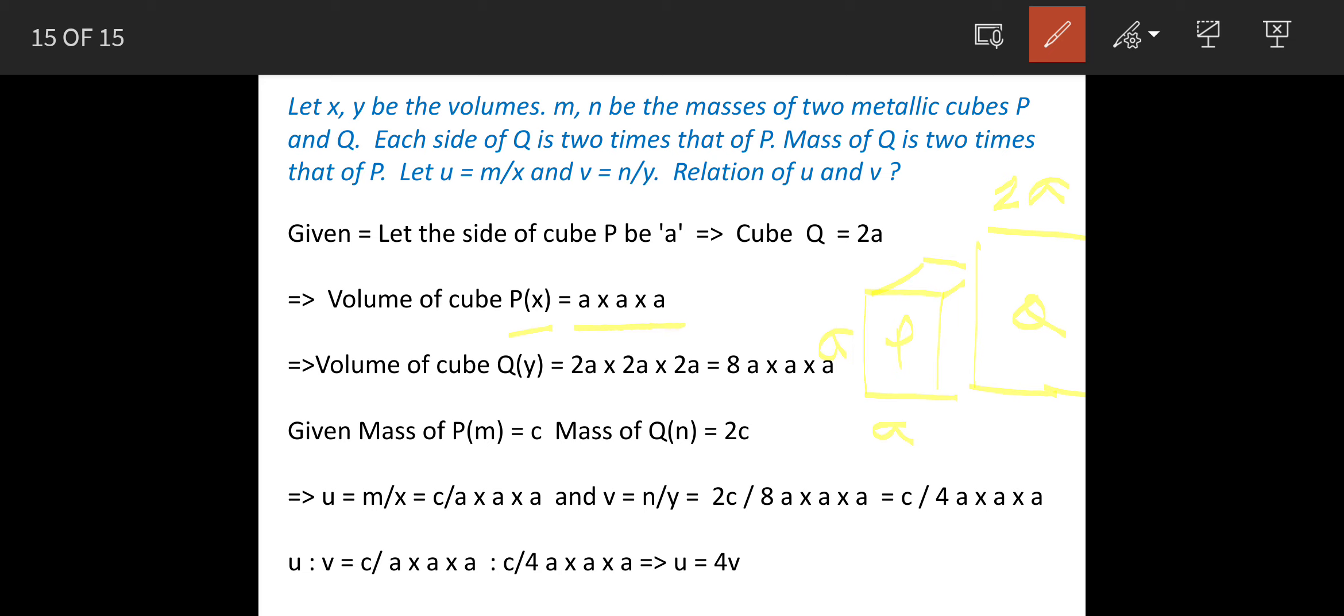Now volume of cube Q - now this side is 2A, so 2A into 2A into 2A, which equals 8A³.